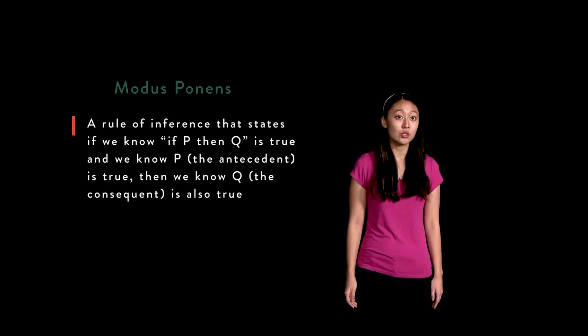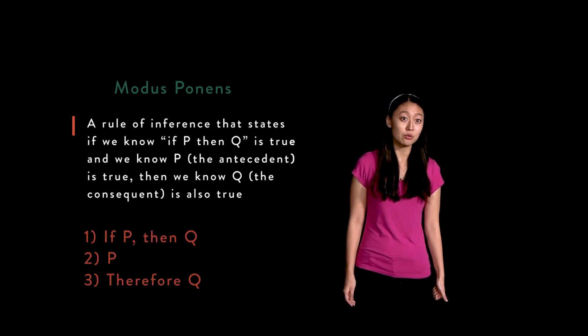In variable notation, the rule appears in the form: 1. If p then q, 2. p, 3. therefore q.